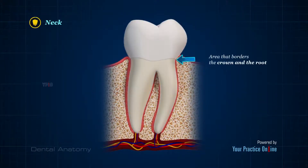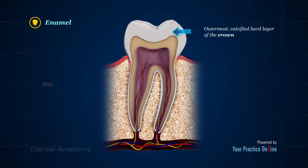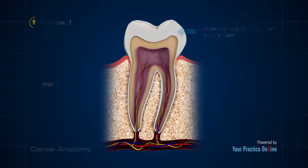The Neck is the area that borders the crown and the root, generally close to the gum line. Enamel is the outermost, calcified, hard layer of the crown. The enamel is even harder than bone.